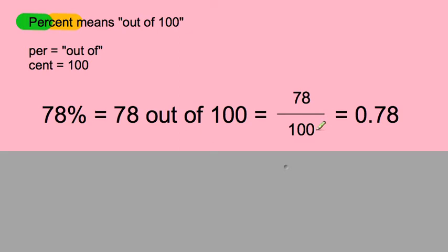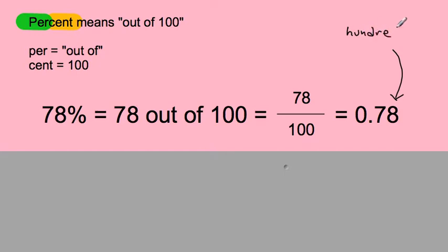In fractions, 100 pieces make the whole and 78 of them are represented, so it's 78 out of 100. That's 78 divided by 100, which equals 0.78. What you can see is that if it's 78 out of 100, that 8 part of the 78 is going to end in the hundredths place. You always have to find the hundredths place — whatever that last digit is, it goes in the hundredths place.